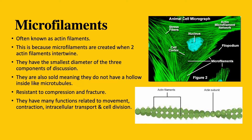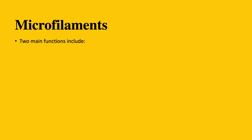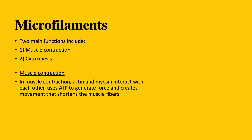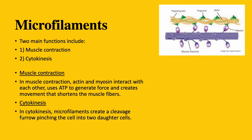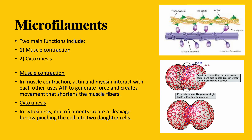They are resistant to compression and fracture, so they have several functions related to movement, contraction, intracellular transport, and cell division. Two of their main functions are muscle contraction and cytokinesis. During muscle contraction, actin and myosin interact with each other. They use ATP to generate force and create movement. This is what shortens the muscle fibers and therefore the muscles. During cytokinesis, microfilaments create a cleavage furrow, pinching the cell into two daughter cells, as you can see in the picture here.